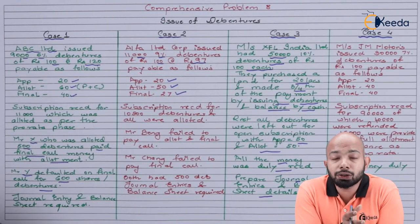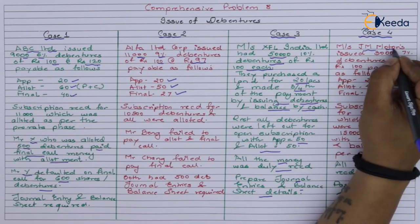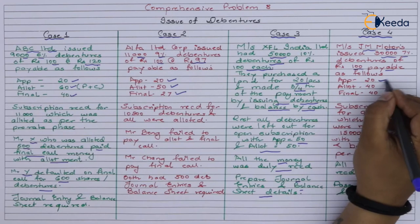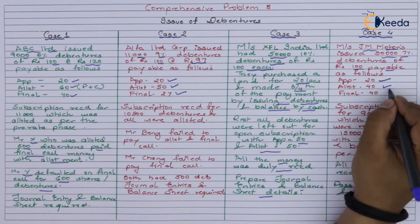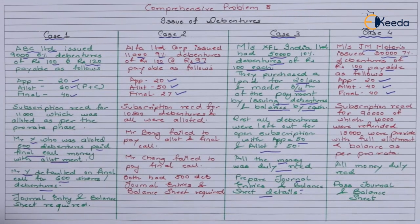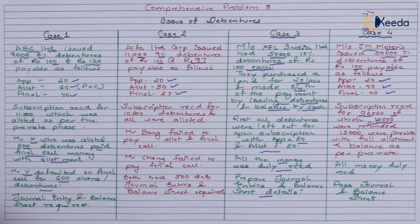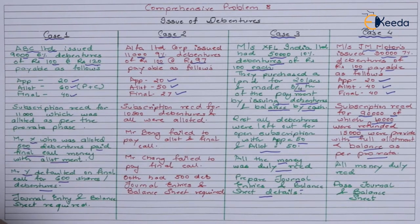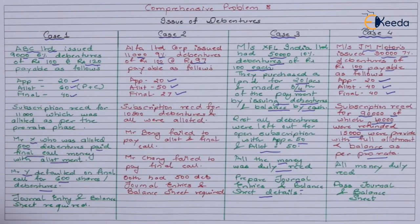Case 4 refers to JM Motors, who issued 30,000 7% debentures of Rs.100 each. The amount was payable as follows: on application Rs.20, on allotment and final call Rs.40 each. The subscriptions received were for 90,000 shares. Out of which they refunded 40,000 instantly, 15,000 were allotted as full debentures, and the balance in pro-rata terms. All money was duly received. We have to pass journal entries and prepare the balance sheet.